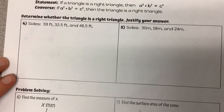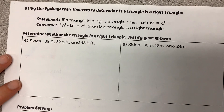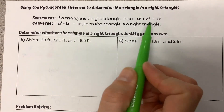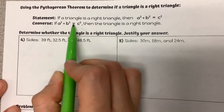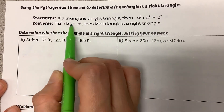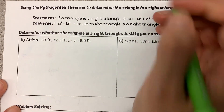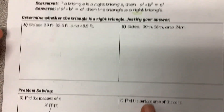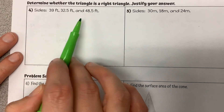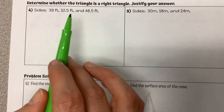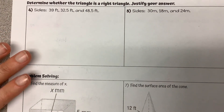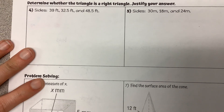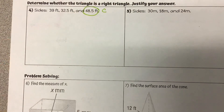We can also use this to determine if something is a right triangle. If we know that A squared plus B squared equals C squared in a right triangle, and if that is true — if the squares of the legs equals the square of the hypotenuse — then we know that it is a right triangle. When it's saying to justify your answer, showing the work to prove it is what we are looking for. I'm plugging into A squared plus B squared equals C squared. I need to find my largest side: 48.5 is the largest side, so that's going to be my C value.